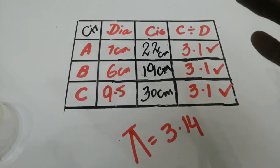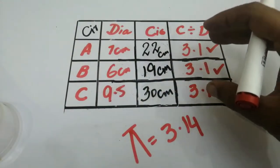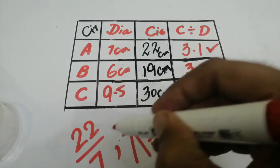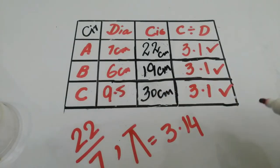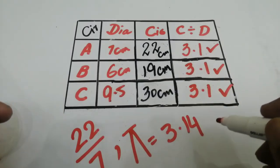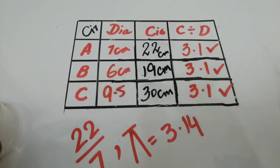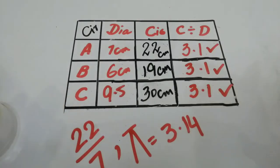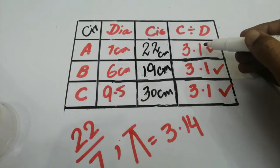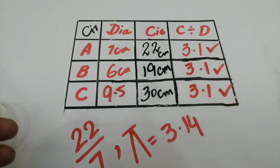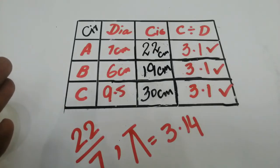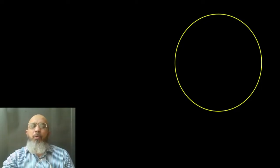If the circumference of any circle is divided by its diameter, we always get approximately 3.14 — or in fraction form, 22 over 7. This is the value of pi, and this is how mathematicians arrived at it. You can perform this activity at home — you just need a scale, a thread, and three round shapes. Find their diameters, find the circumferences, divide, and you will get approximately the same answer each time.